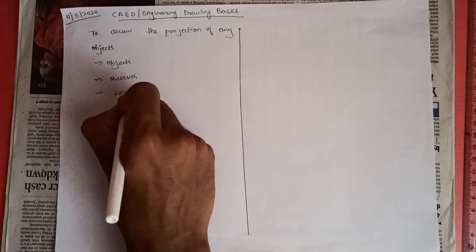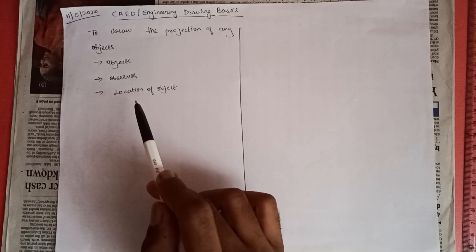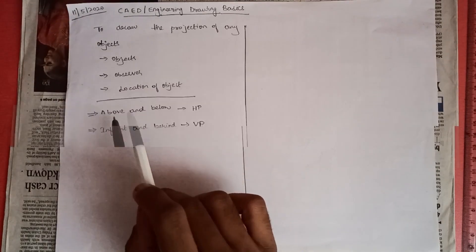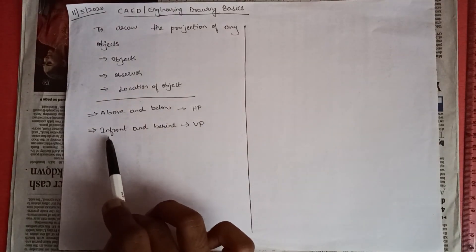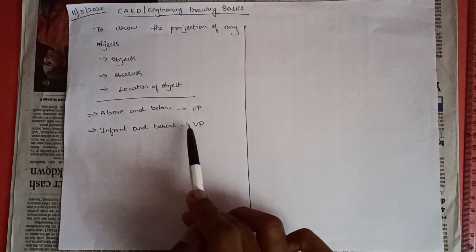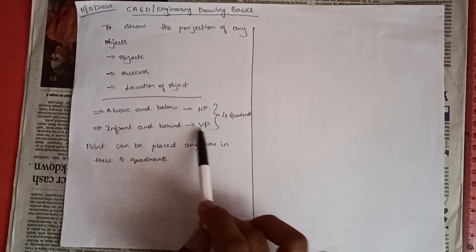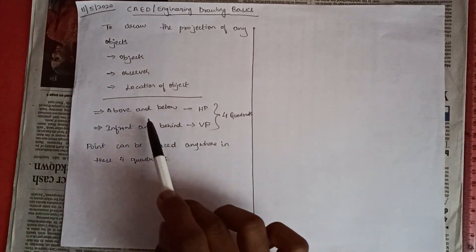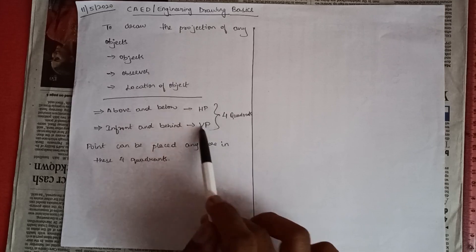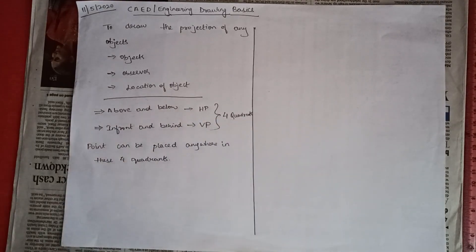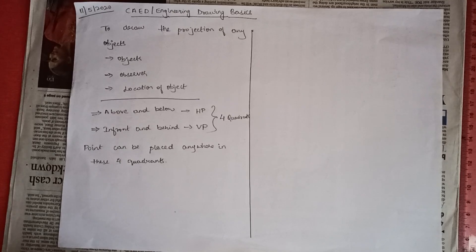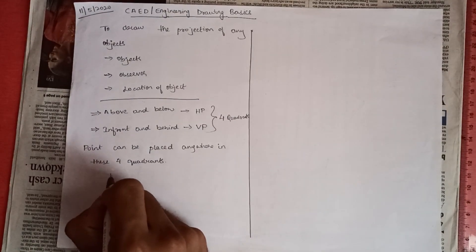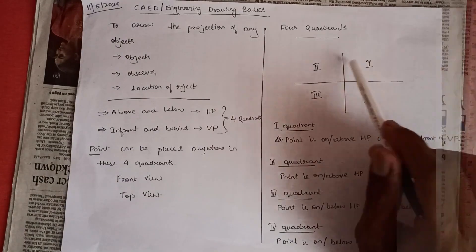You'll also need the location of an object — meaning its position with reference to HP and VP. In orthographic projections, the terms 'above' and 'below' refer to HP, and the terms 'in front' and 'behind' refer to VP. These form four quadrants, and a point can be placed in any of them, giving different views such as front view and top view.